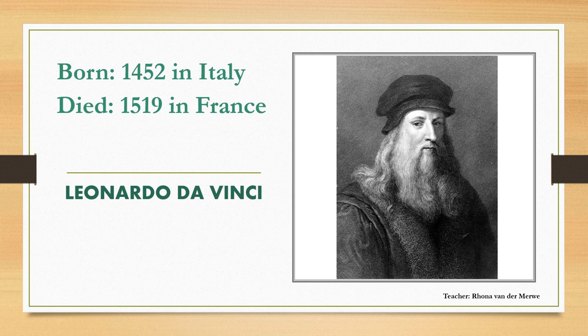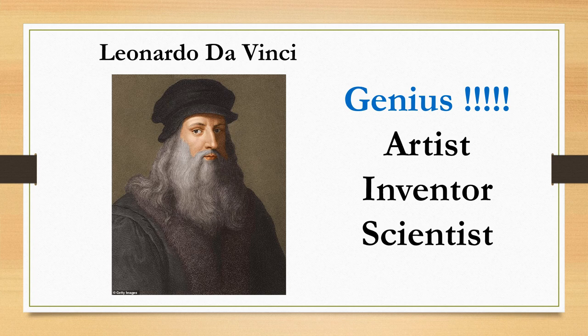Da Vinci was a genius. He was an artist, inventor and scientist — actually quite a lot. He was a brilliant, brilliant artist, sculptor, draftsman, inventor, scientist, mathematician, engineer, costume maker, writer and musician. He was also very interested in the laws of science and nature, which greatly influenced his work.